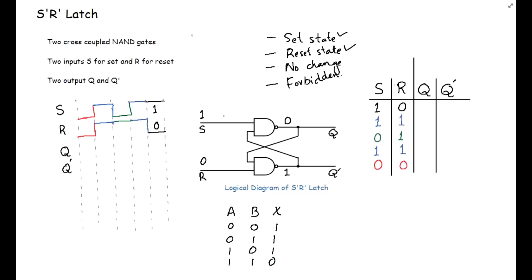For this first input combination S=1, R=0, the result is Q=0 and Q'=1. So Q is equal to 0 and Q' is equal to 1. Let me draw this on the diagram: Q=0 and Q'=1.